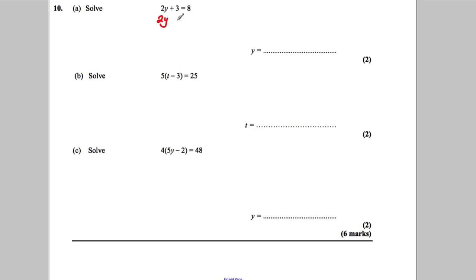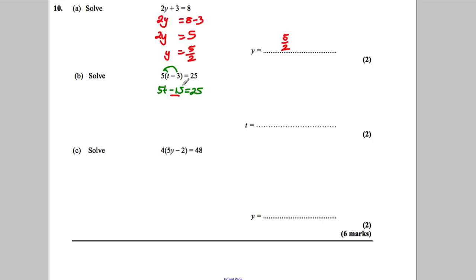We subtract 3 off both sides. 2Y is 8 subtract 3. 2Y would therefore be 5. Divide by the 2. Y is 5 over 2 — fine to leave your answer like that. Brackets here: let's multiply out the brackets first. 5T subtract 15 is equal to 25. We've got negative 15 here, so add 15 to both sides. 5T would be 25 add 15. That would make 5T equal to 40. Divide both sides by 5. T is 40 over 5. That makes T 8. Check: 8 take away 3 is 5, 5 times 5 is 25. Got it.